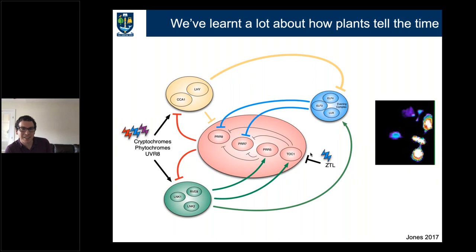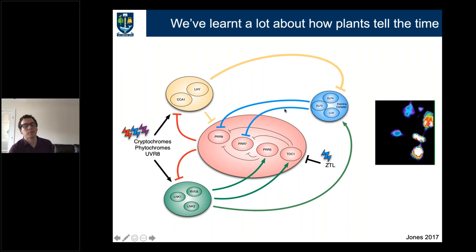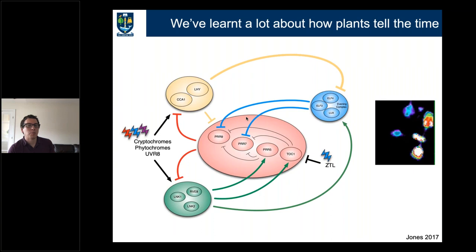I have no intention that people should memorize this complex understanding of the clock, but the important thing is that it's a complex feedback loop. There are morning-phased components on the left-hand side and evening-phase components on the right, each forming interconnecting loops that give us a circadian rhythm persisting in constant conditions, taking about 24 hours to run through. We also know where various photoreceptors are acting: cryptochromes, phytochromes, and UVR8 act predominantly at dawn, whereas ZTL — one of the zeitlupe family — works towards the end of the day.